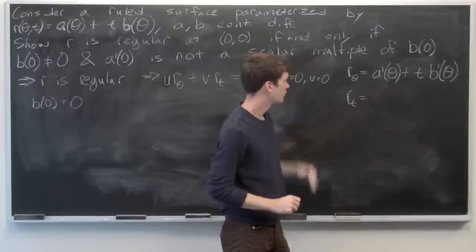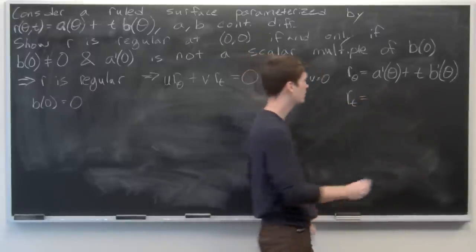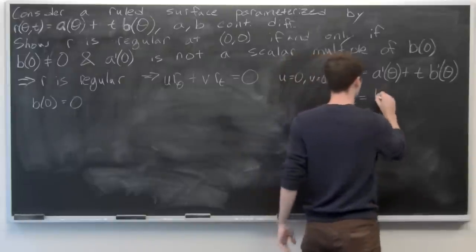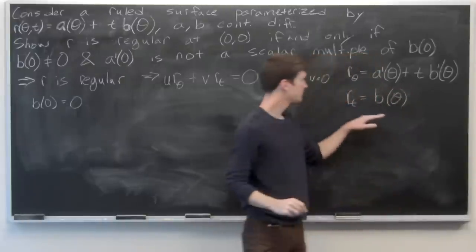The partial derivative of r with respect to θ is a′(θ) + t·b′(θ), and the partial derivative of r with respect to t is just b(θ).